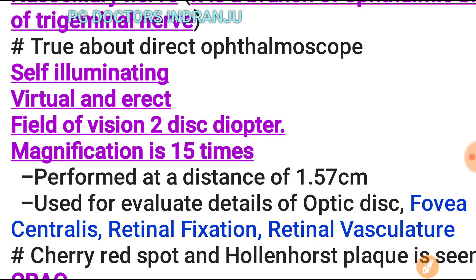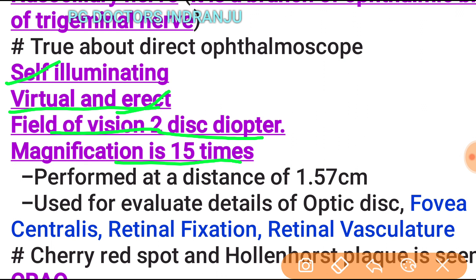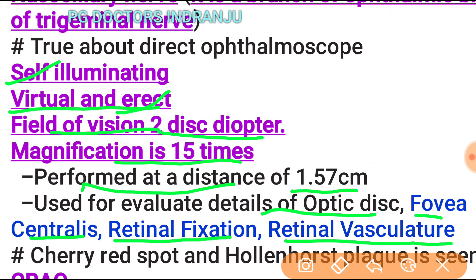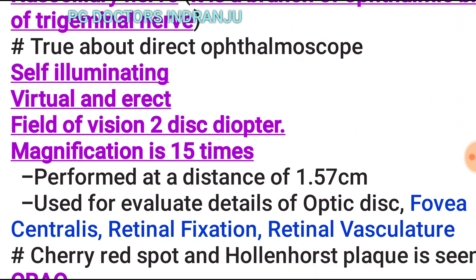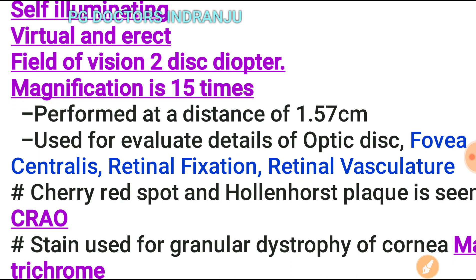Regarding the direct ophthalmoscope: it is self-illuminating, the image formed is virtual and erect, field of vision is two disc diameters, magnification is 15 times, it is performed at a distance of 1.5 centimeters, and it is used for detailed examination of the optic disc, fovea centralis, retinal fixation, and retinal vascularization.